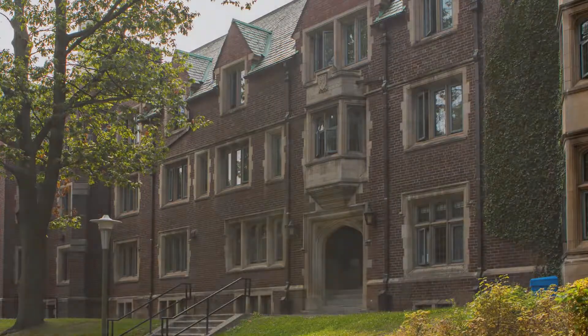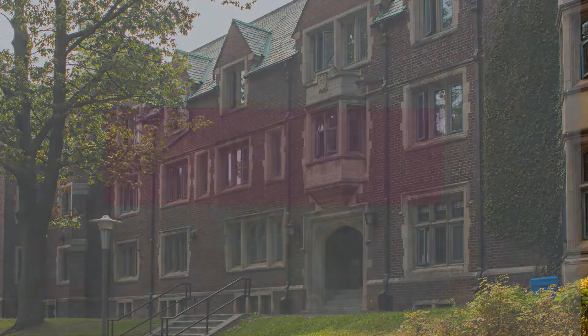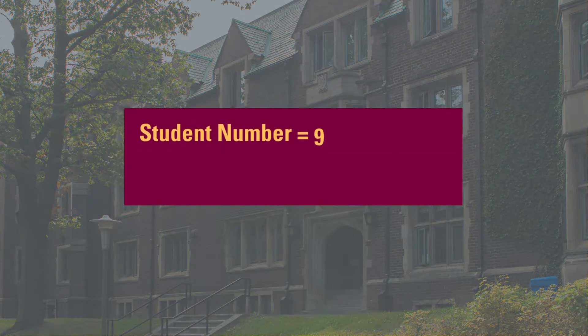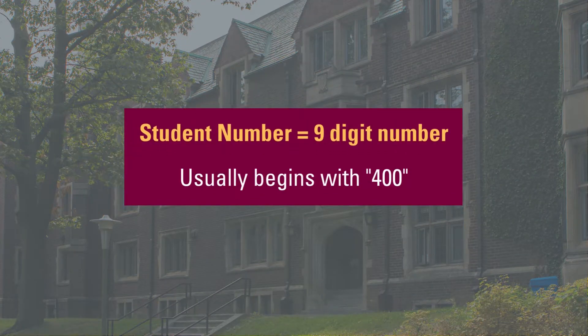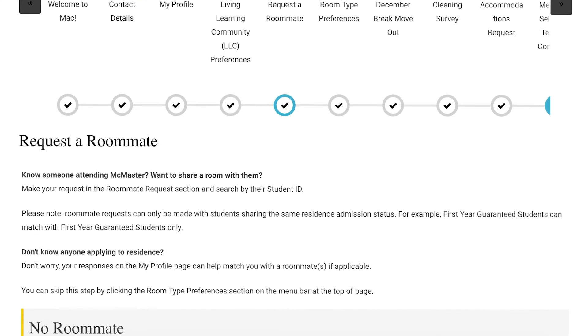If you and your prospective roommate do have the same offer status, exchange student numbers now, because you will both need to add the other person's student number to the request a roommate section on the application. Keep in mind that your student number is usually made up of nine numbers and often begins with 400. It is not your alphanumeric Mac ID.